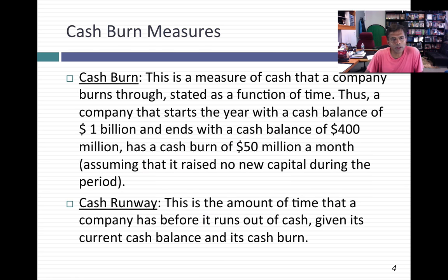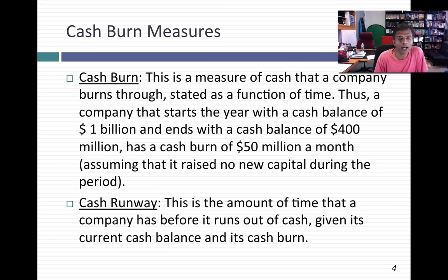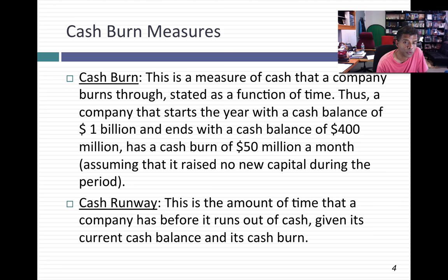When you start thinking about cash burn, the first question is: how do I measure it? There are two ways. One is as a dollar value — the amount of cash you burn through in a week, a month, or a year. It's usually computed by taking the starting cash balance you had as a company, taking the ending cash balance at the end of the period, and dividing by the number of weeks or months in the period. So as an example: you start the year with a billion dollars in cash, you end the year with $400 million in cash, and with 12 months, your cash burn is about $50 million a month. This works only if no new capital is being raised during the year, so be careful about the shortcut.